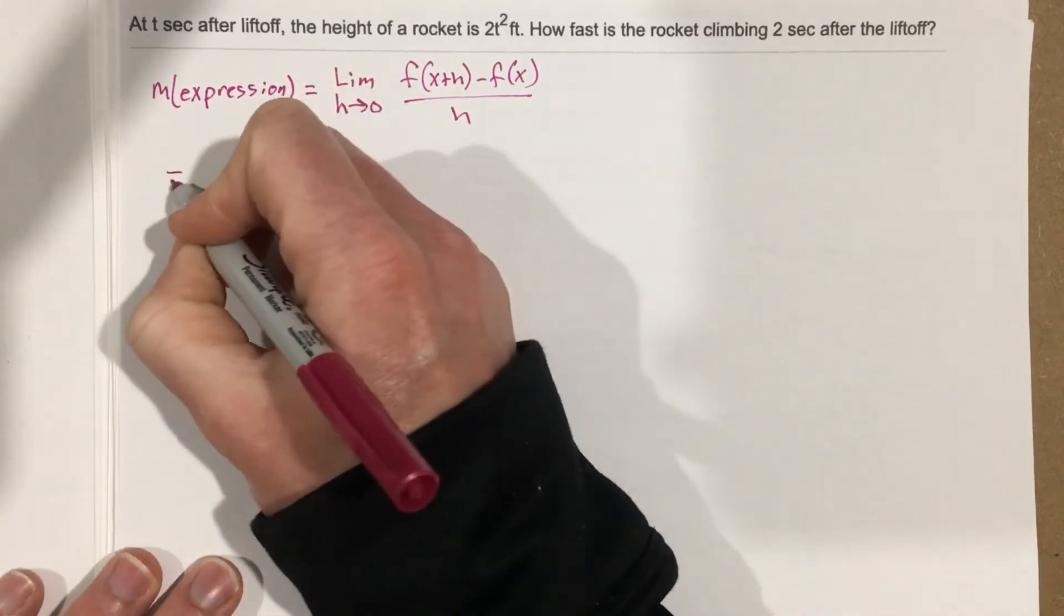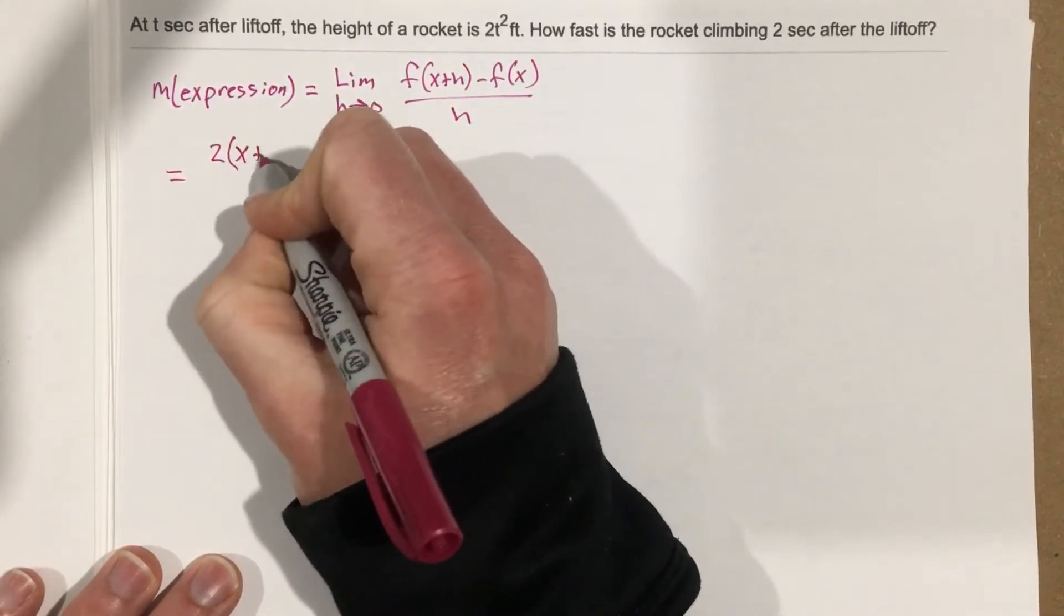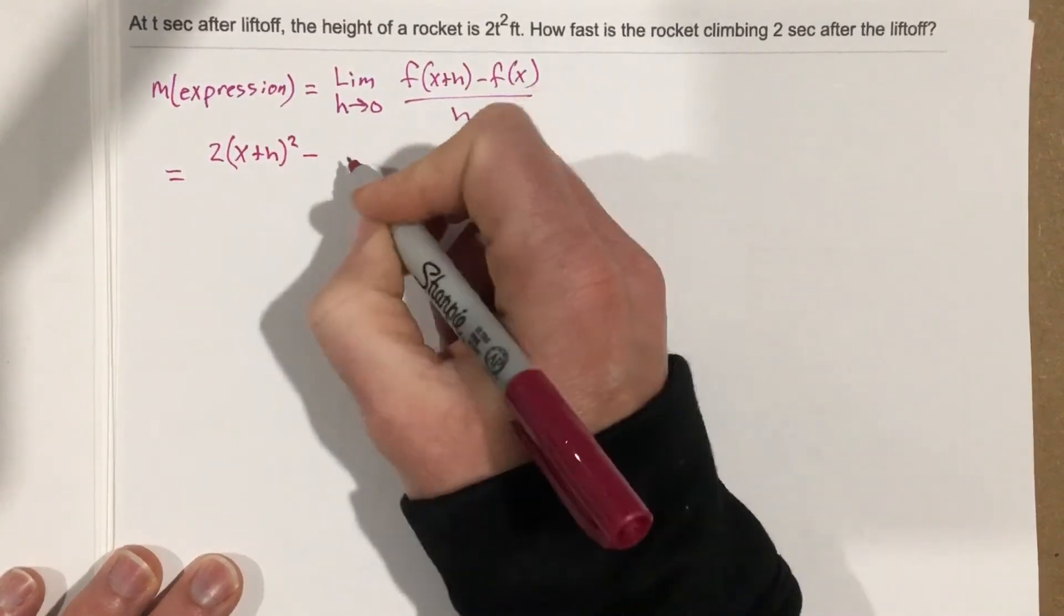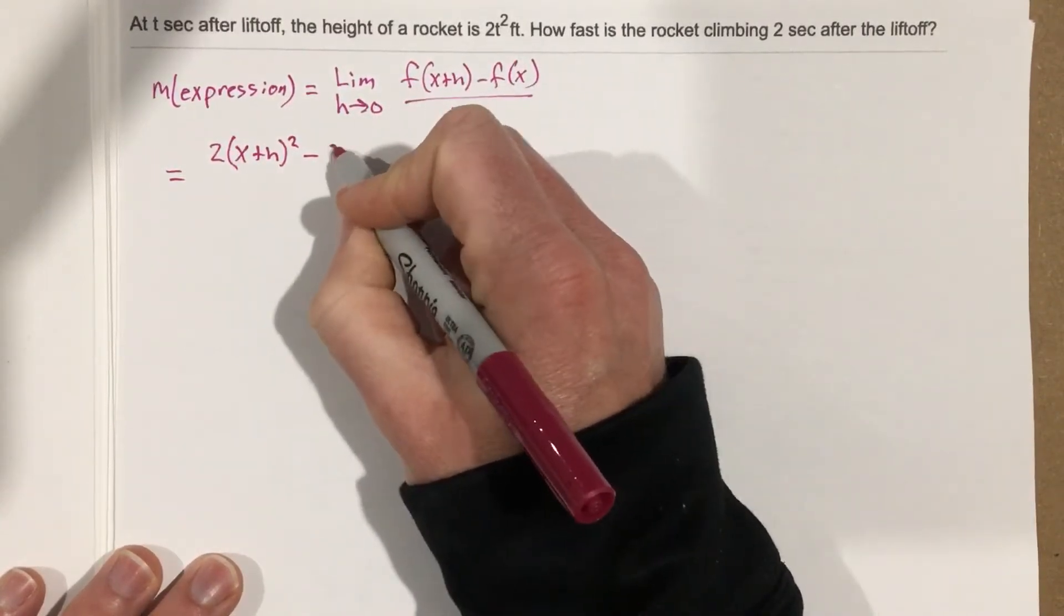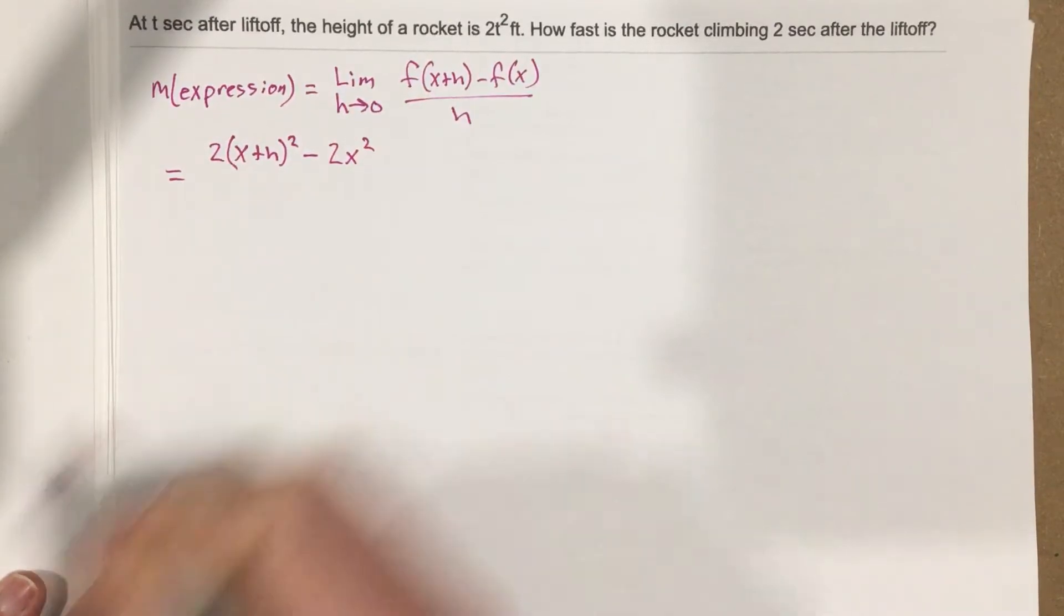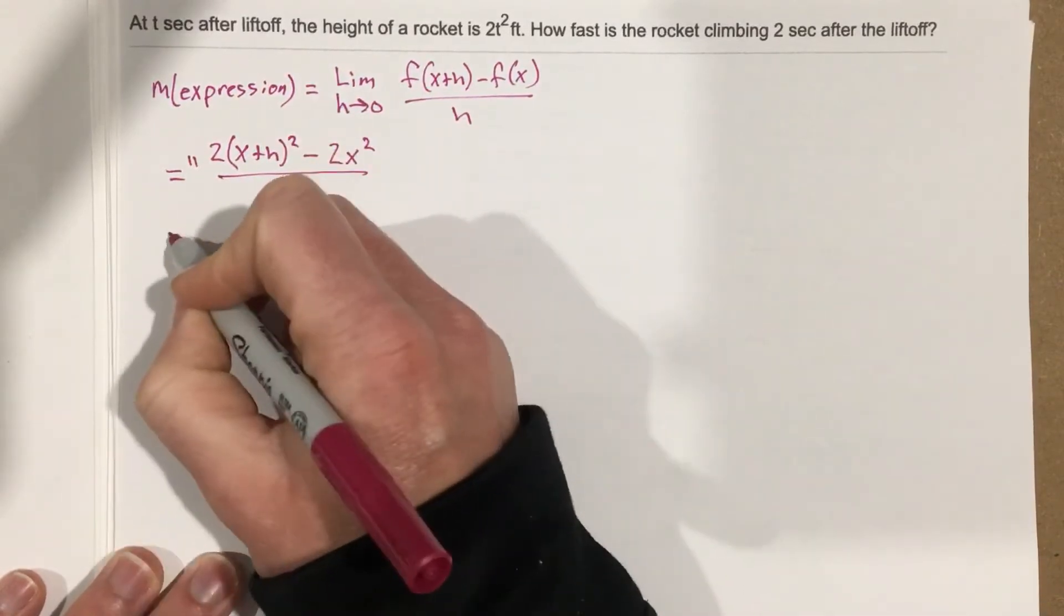That's going to equal, we're going to plug in x plus h, and that's 2 times x plus h squared minus the original function, which is 2x squared, all over h. Don't forget, this is limit as h approaches 0.